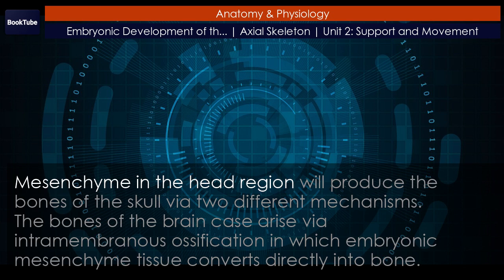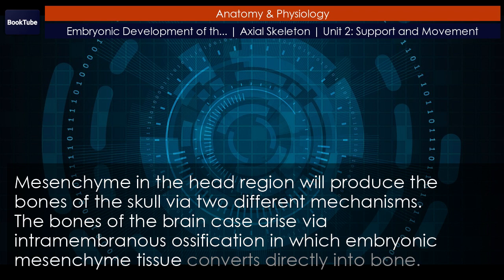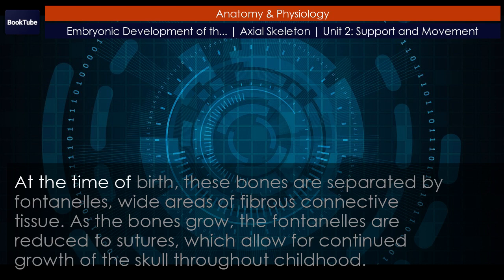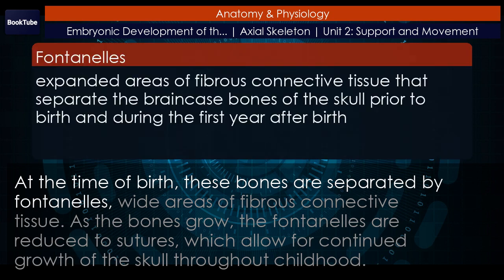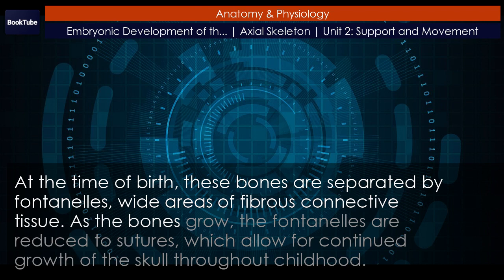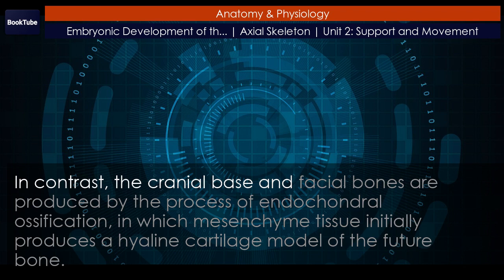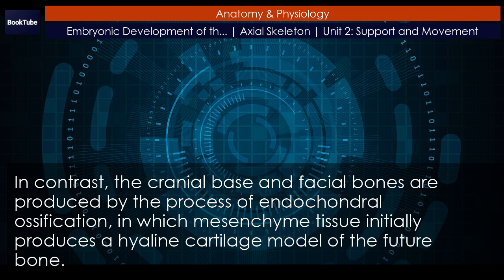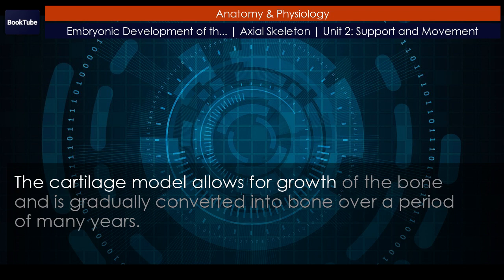Mesenchyme in the head region will produce the bones of the skull via two different mechanisms. The bones of the brain case arise via intramembranous ossification, in which embryonic mesenchyme tissue converts directly into bone. At the time of birth, these bones are separated by fontanelles — wide areas of fibrous connective tissue. As the bones grow, the fontanelles are reduced to sutures, which allow for continued growth of the skull throughout childhood. In contrast, the cranial base and facial bones are produced by the process of endochondral ossification, in which mesenchyme tissue initially produces a hyaline cartilage model of the future bone. The cartilage model allows for growth of the bone and is gradually converted into bone over a period of many years.